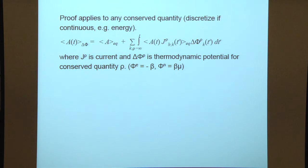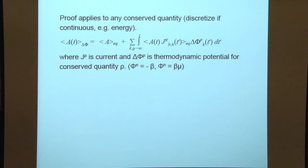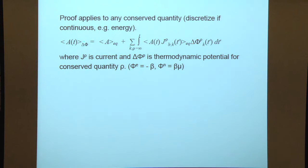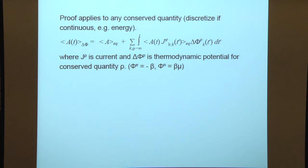The proof applies to any conserved quantity. If it's a continuous quantity like energy, you would have to discretize it — so at that level it's a physical proof rather than a fully mathematical one, but you can make the energy chunks as small as possible. Immediately we get the general result: any quantity measured with the reservoirs at slightly different thermodynamic potentials equals its equilibrium value plus the correlation function of that quantity with the corresponding conserved current flowing from the boundary into the system at time t'. So the correlation is with the current flowing in from the boundary.